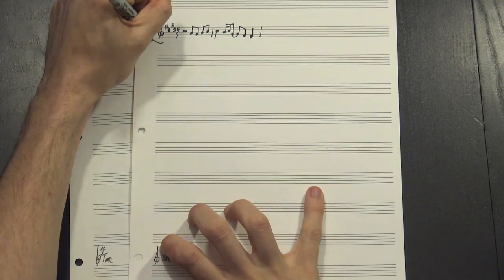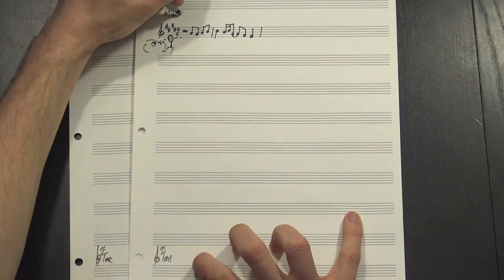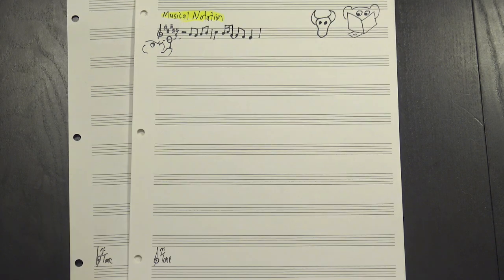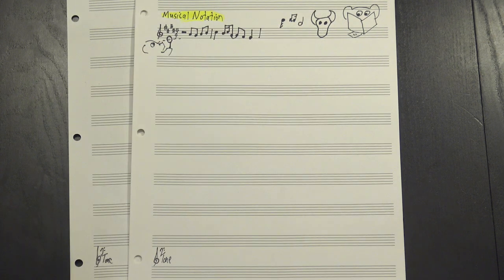Hey, welcome to 12tone! Look at this! You've probably seen something like it before, it's just regular musical notation. We've talked about how it works already, but today I'd like to look at why it works. That is, how did we get here? How did these dots and squiggles come to represent this?